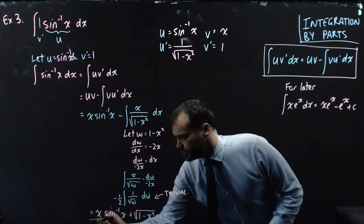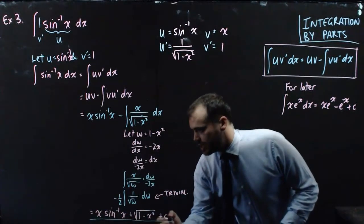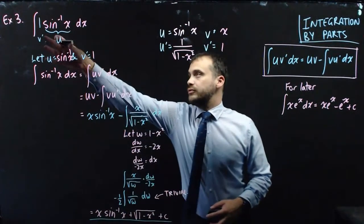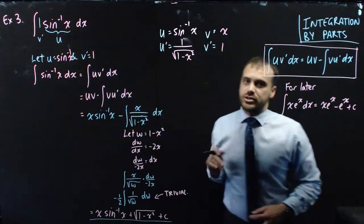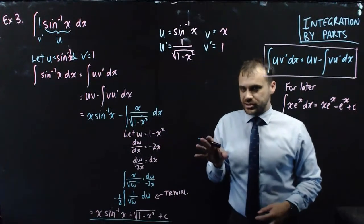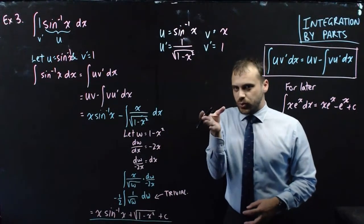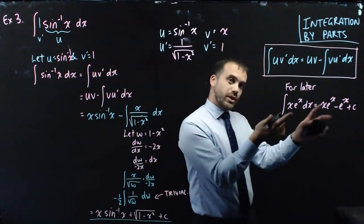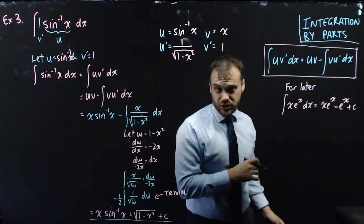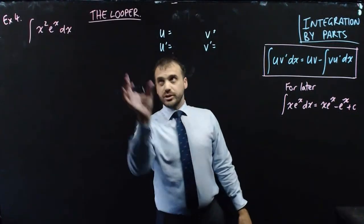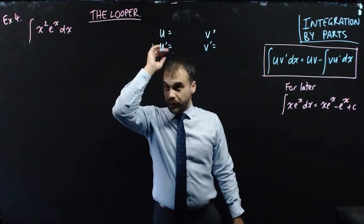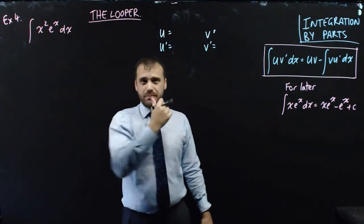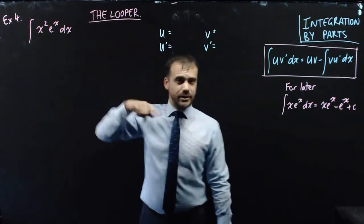That's our final answer to the integral of arcsin x: x arcsin x minus √(1 − x²) plus c. We're going to do one more example because we still need to use what I said was going to be useful information.